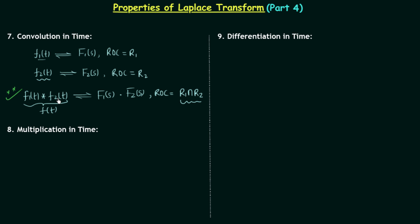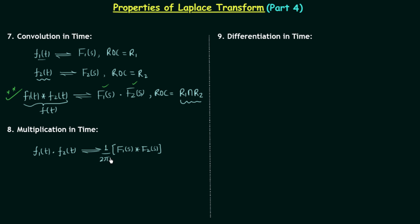So this is the convolution in time property: whenever you convolve two time domain signals, their corresponding Laplace transforms are multiplied. Now moving to property number 8, multiplication in time — we multiply signal f1(t) and signal f2(t), and the resultant Laplace transform equals F1(s) convolved with F2(s) divided by 2πj, with the ROC containing at least r1 intersection r2.